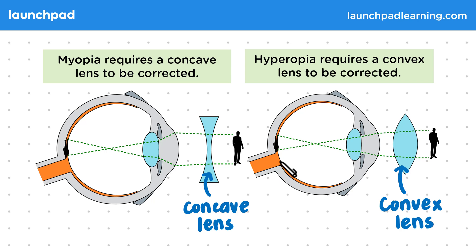So, to summarise: myopia requires a concave lens and hyperopia requires a convex lens.